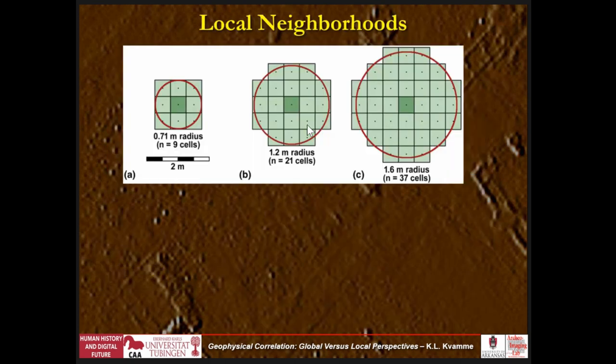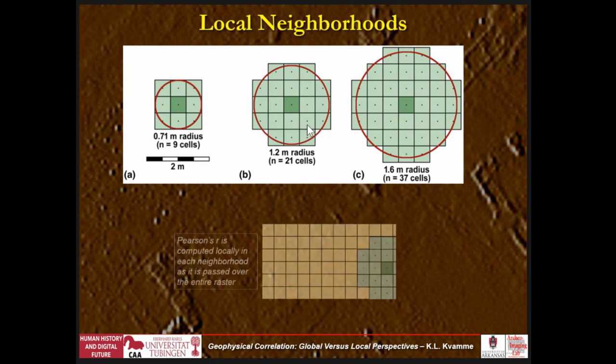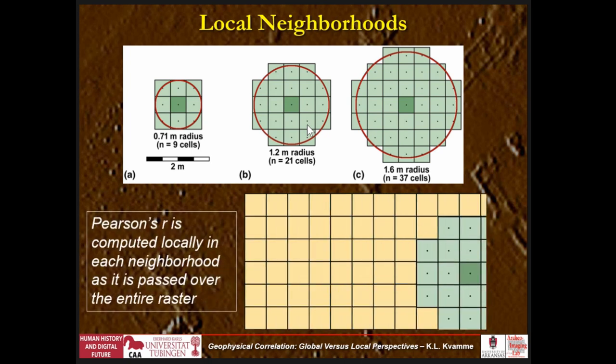So with a lot of apparent relationships, let's look at local correlations. I decided to explore three local neighborhoods: a 0.71-meter radius with nine cells for each correlation, a 1.2-meter radius for 21 cells, and 1.6 meters for 31 cells. The idea is you have this moving window and for each position you compute Pearson's R — or Spearman's Rho if you want a nonparametric one — and you just pass this window over the data to get Pearson's R on a per-cell basis.